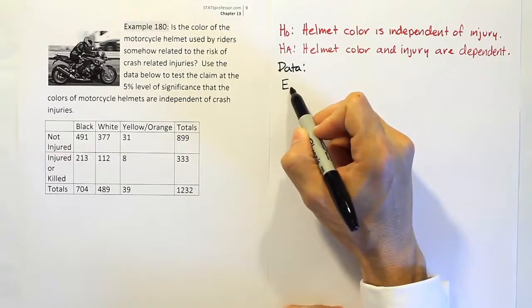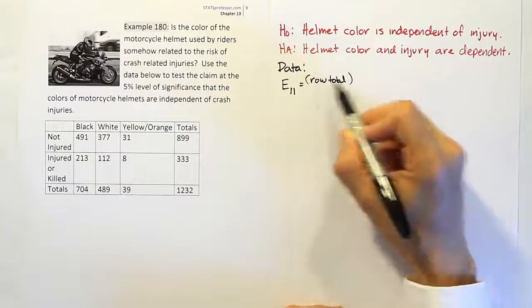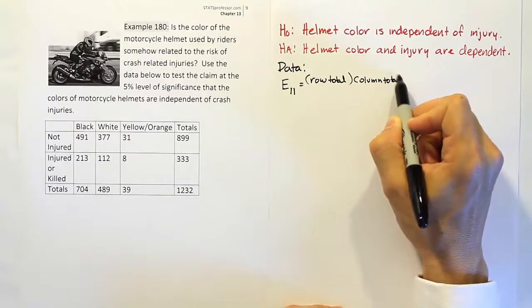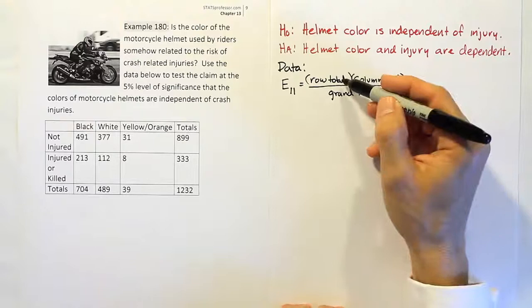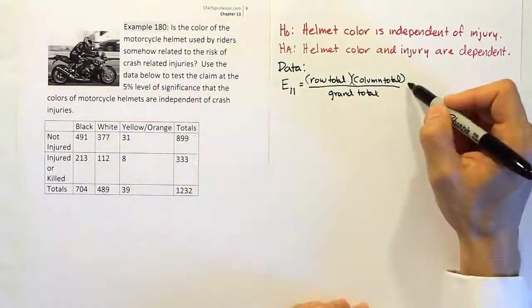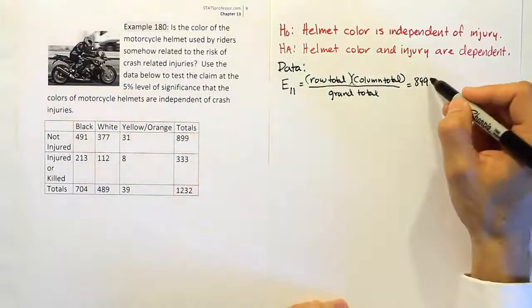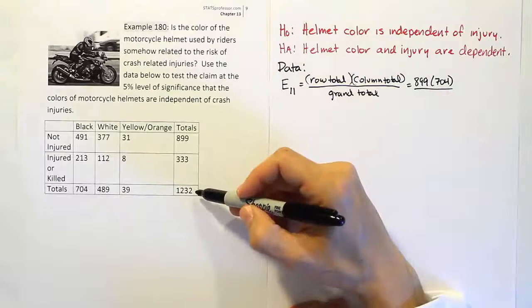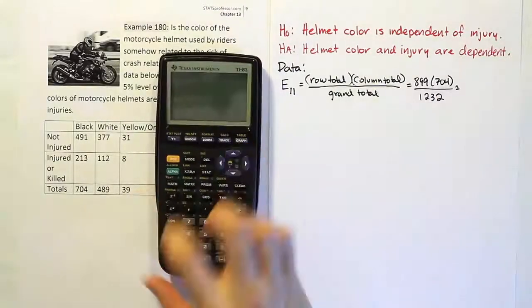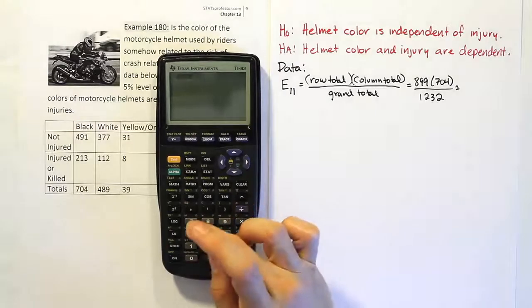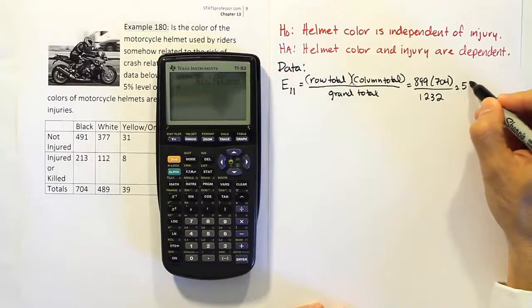Let's do the expected value for the cell in the first row, first column. The formula is the row total times the column total, and then divide it by the grand total. The row total for the first row is 899, multiplied by the column total for the first column which is 704, divided by the grand total 1,232. That gives us 899 times 704 divided by 1232, which equals 513.71 when rounded to two decimal places.